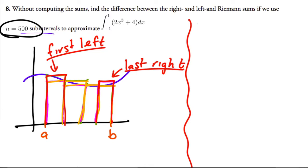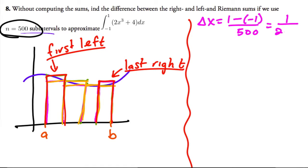First thing we need to do is find delta x, which is b minus a over n. So this is 2 over 500, or 1 over 250.